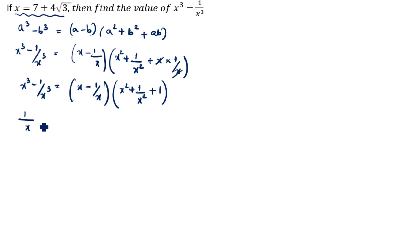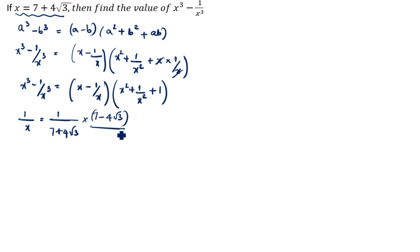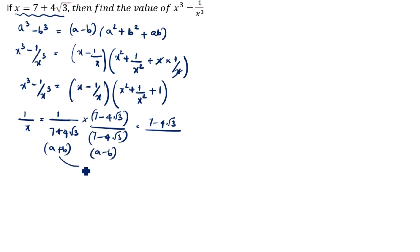We know x is 7 plus 4 root 3. What is 1 by x? 1 by x is equal to 1 by (7 plus 4 root 3). We will rationalize the denominator. Multiply by (7 minus 4 root 3) divided by (7 minus 4 root 3). This gives (7 minus 4 root 3) divided by — using (a plus b)(a minus b) equals a square minus b square — which is 7 squared minus (4 root 3) squared.